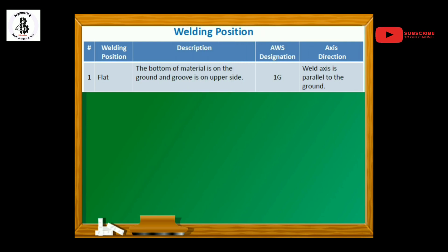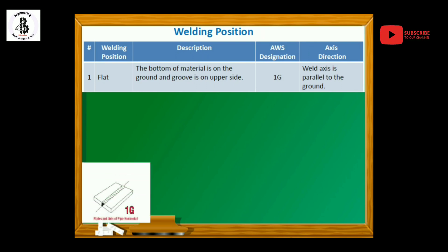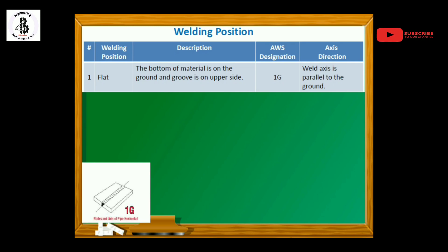The most important part of the welding process is the welding positions. There are basically four positions. The first is the flat position: the bottom of the material is on the ground and the groove is on the upper side. As shown in the figure, it is also known as the 1G position per AWS — American Welding Society — designations, where the weld axis is parallel to the ground.